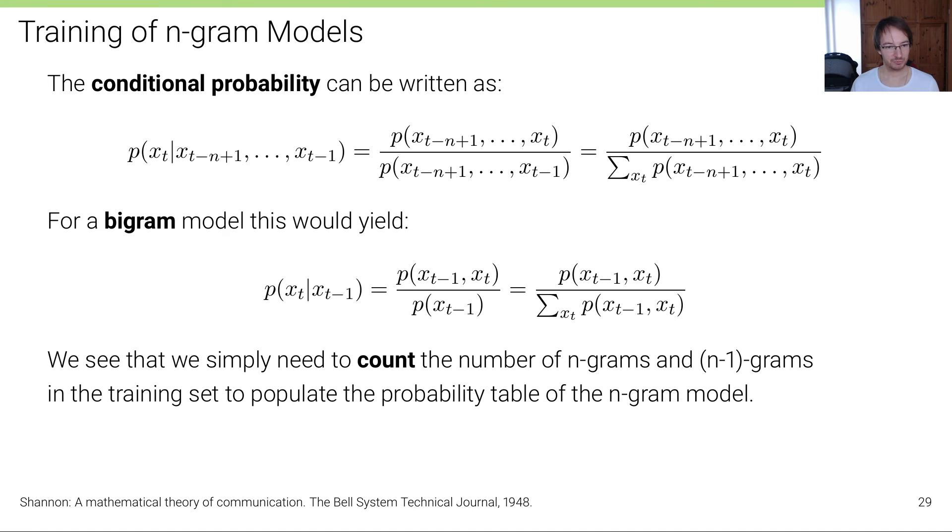For a bigram, these equations look a bit nasty, I agree, but if we just assume n=2, then this reduces to the simple expression: p(xT|xT-1) = p(xT-1,xT) / p(xT-1), or over p(xT-1) with xT marginalized over xT.